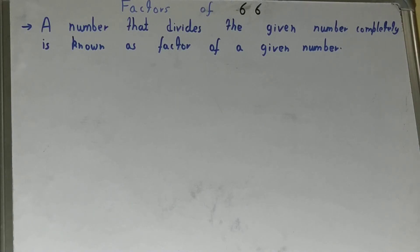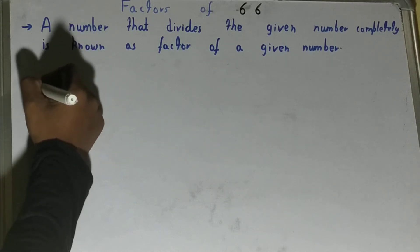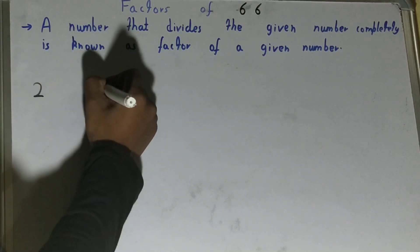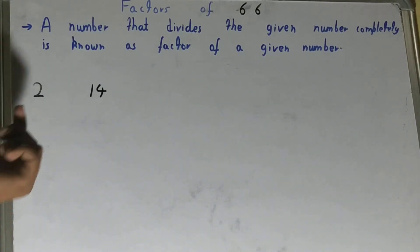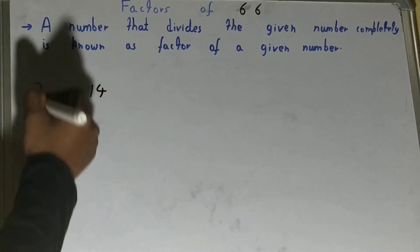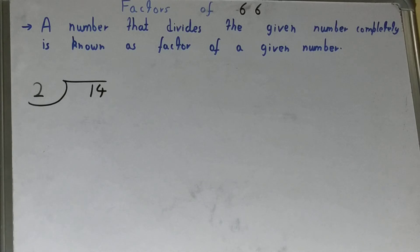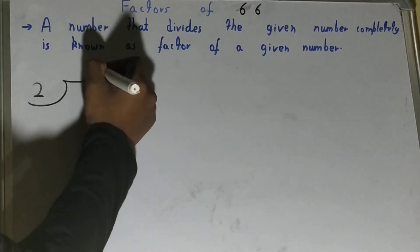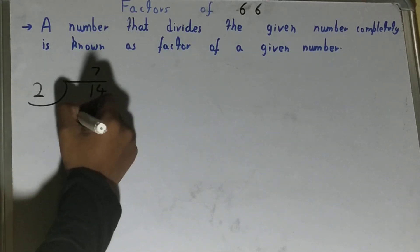If you didn't understand, don't worry. I'll show you with an example. Let's say I've got two numbers, 2 and 14, and you have to check whether 2 is a factor of 14 or not. How do you check? By simply dividing it.